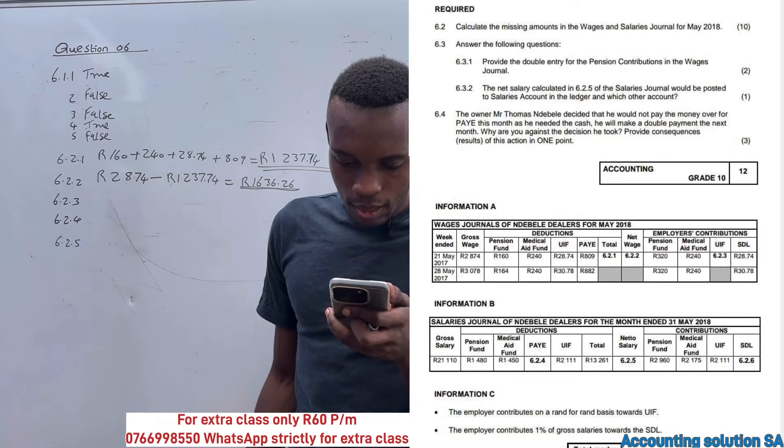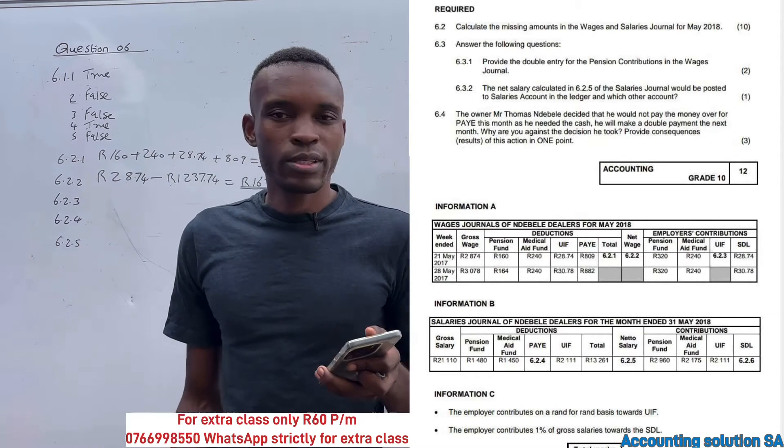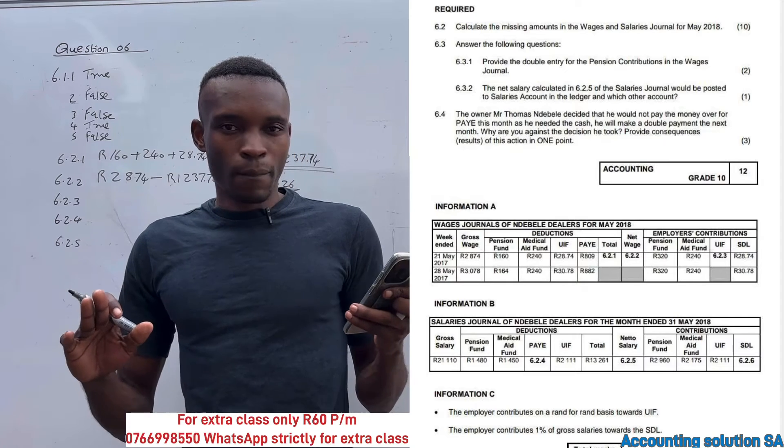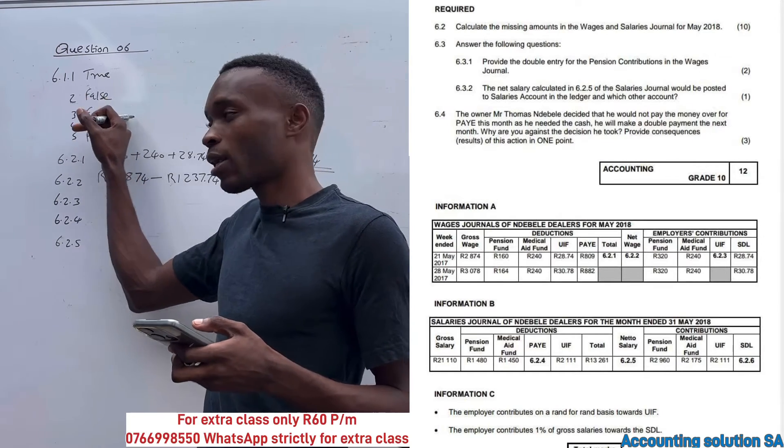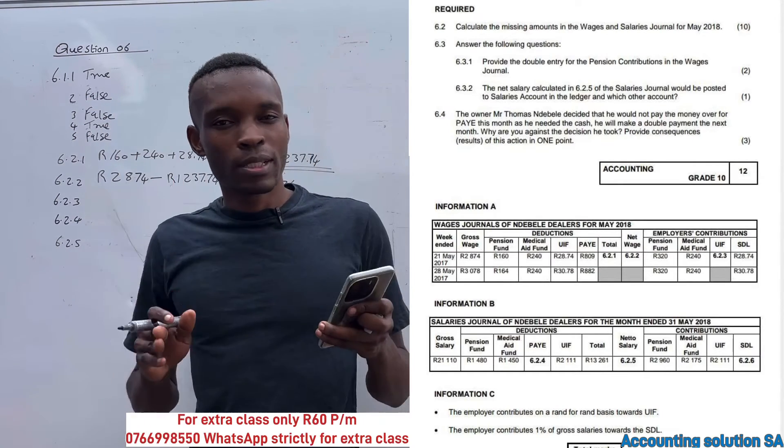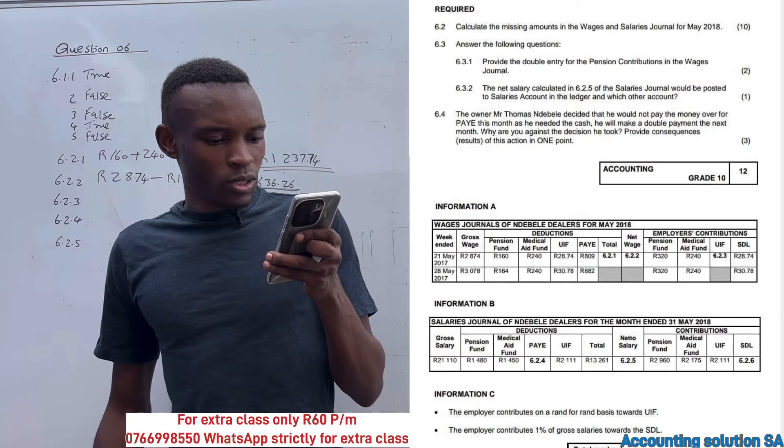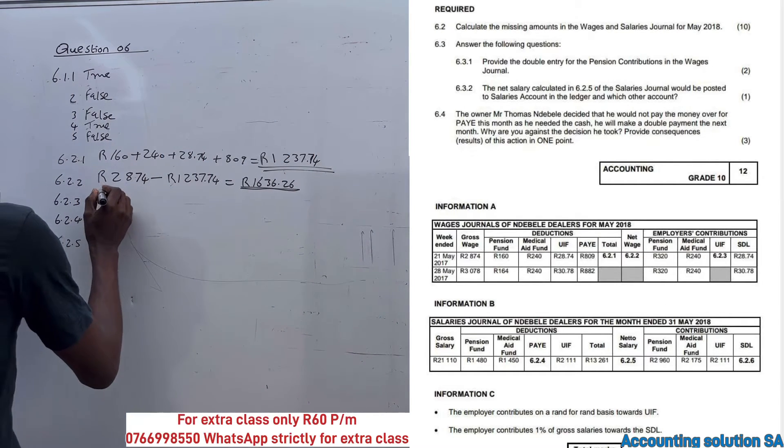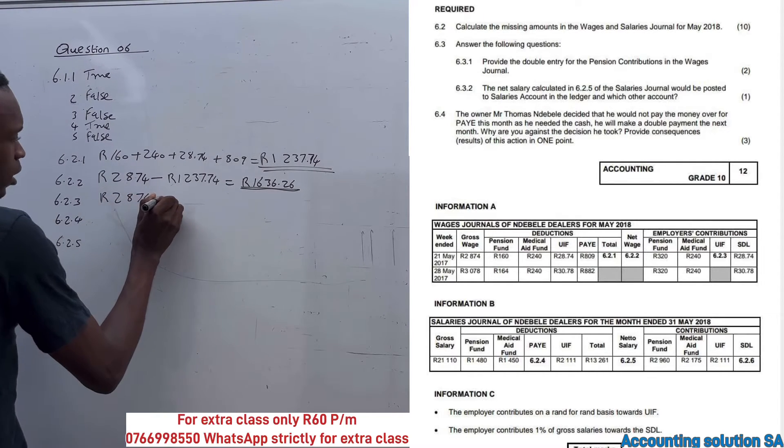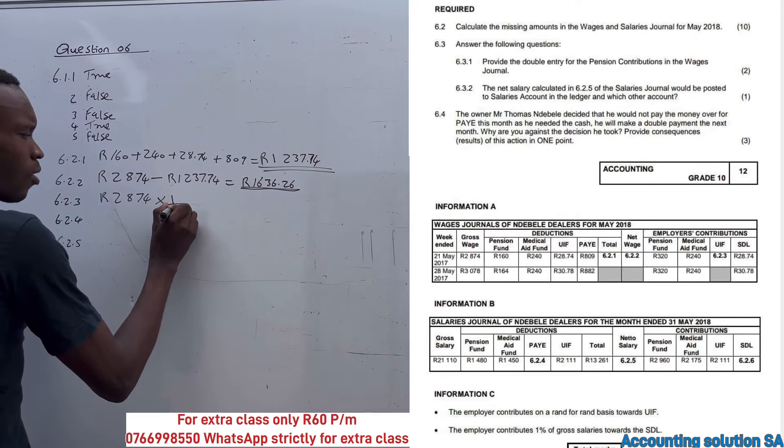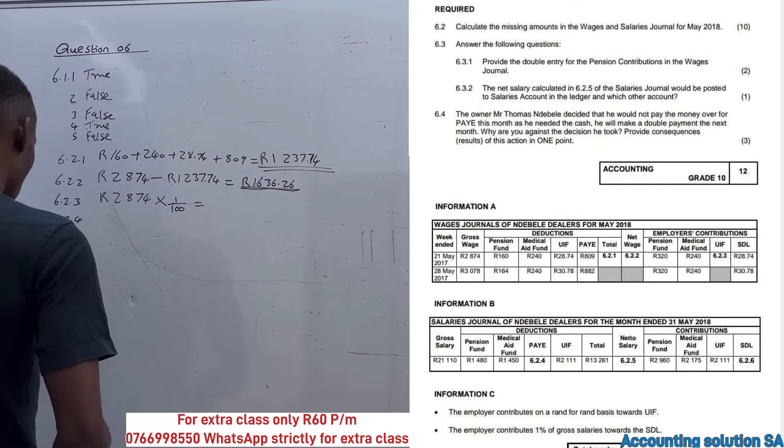6.2.3 is UIF. That's what they want us to calculate. They didn't tell us anything, but we know that UIF is 1% of gross salary, like we were explaining under true/false. UIF is always 1% of gross salary, not net. Now let's check - the gross was 2,874. Now we have to multiply by 1/100, which is 1%, then it will give you an amount of 28.74.